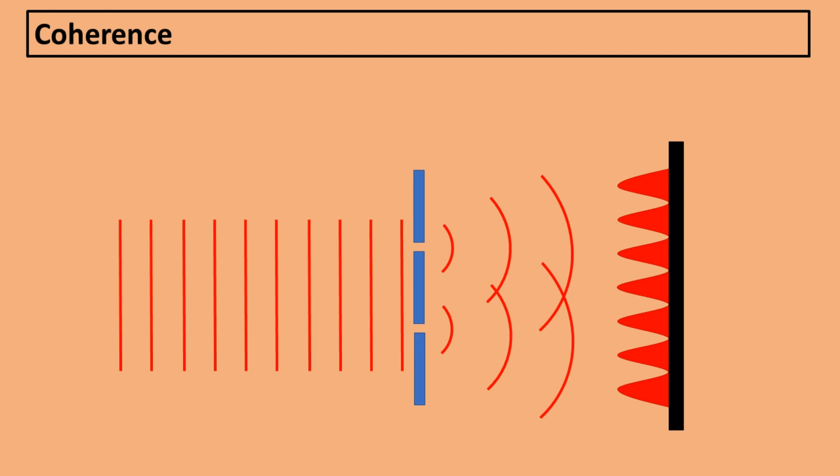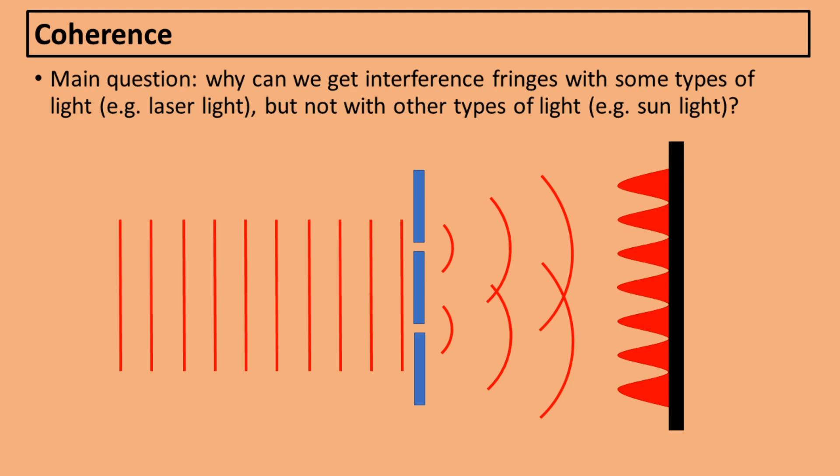One of the experiments that demonstrates the wave nature of light is Young's double-slit experiment. When shining light through two narrow slits, one can observe an interference pattern on a screen behind the slit, and this interference pattern can be explained by assuming that light is a wave. However, we don't always observe interference fringes. For example, with laser light we can easily create fringes, but with sunlight or light from a normal lamp it is much more difficult to achieve. What determines whether we can use certain light to form interference fringes? The answer lies in the theory of coherence.